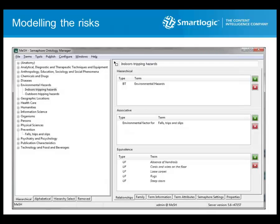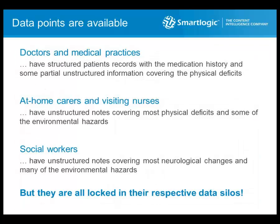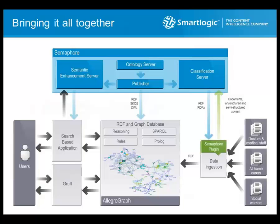Data points about patients are available from multiple sources. Doctors and medical practices have structured patient records with a full medication history and some partial unstructured information covering physical deficits. At home, carers and visiting nurses have unstructured notes covering most physical deficits and some environmental hazards. Social workers have extensive unstructured notes covering most neurological changes and many environmental hazards. But they are all locked in their respective data silos and cannot be seen in perspective or jointly analyzed. The Semaphore and AllegroGraph integration can break that status quo — all three main data sources can be classified and annotated by Semaphore so they can be ingested by AllegroGraph.